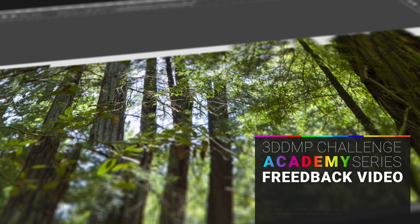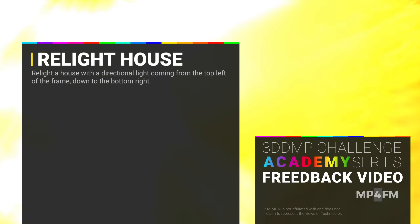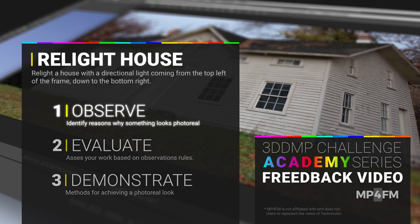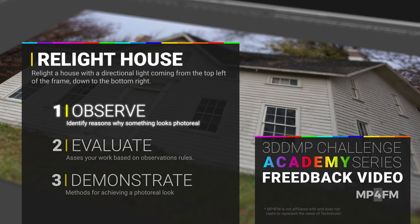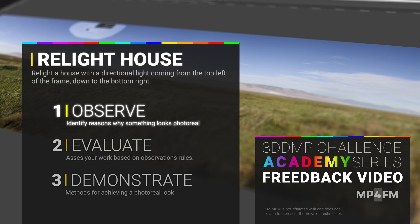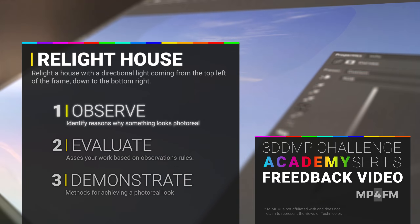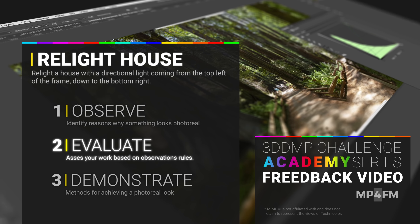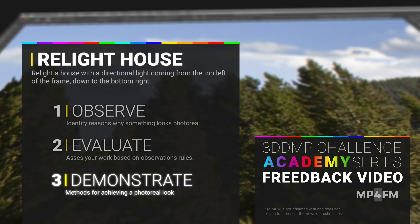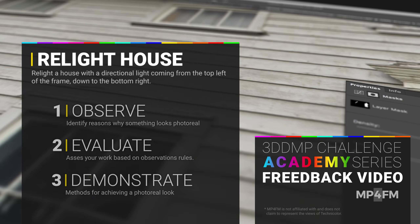Welcome to this DMP challenge feedback video Academy series where we're going to be looking at house relighting. Because the matte painting for filmmakers project is all about skill building, these feedback videos are broken into three sections: first, we're going to look at some reference photography; then we're going to evaluate your work; and lastly, I'm going to be teaching you some relighting techniques in the demonstrate section. Make sure you stay until the very end.